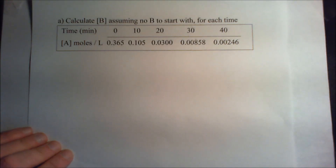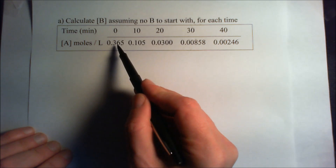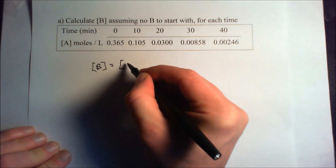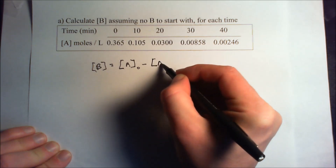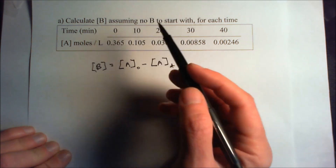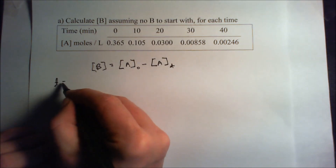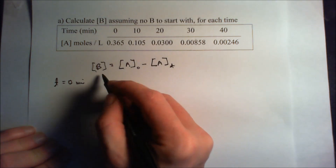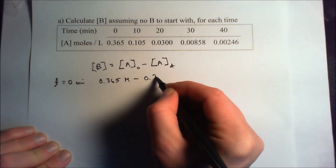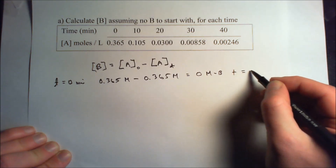For part A, we calculate the concentration of B at each time, assuming no B to start with. The concentration of B equals the initial concentration of A minus the concentration of A at that specific time. At T equals 0 minutes: 0.365 minus 0.365 equals 0 molarity. At T equals 10 minutes: 0.365 minus 0.105 equals 0.260 molarity.